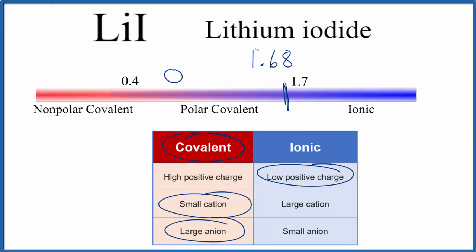So lithium iodide is considered to be a covalent compound with a good bit of ionic character — that's the way we phrase it. To recap: we have an electronegativity difference less than 1.7, and we have a small cation and a large anion, so we consider our bond to be covalent. In fact, it'll be a polar covalent bond between the lithium and the iodide. This is Dr. B — thanks for watching.